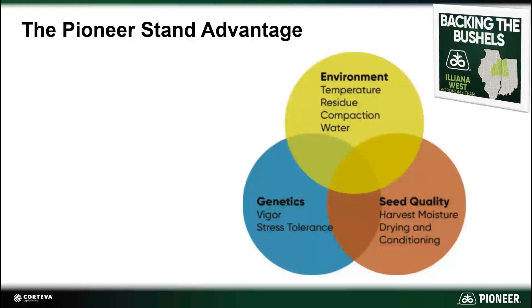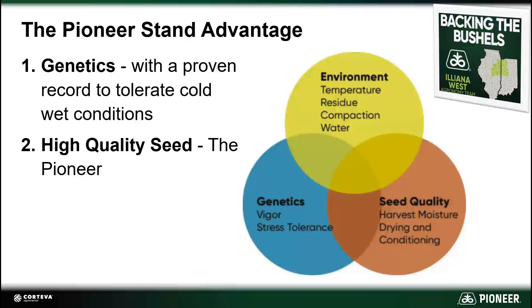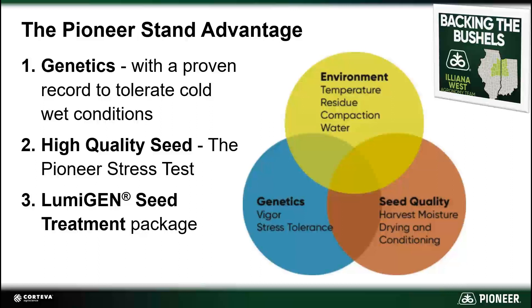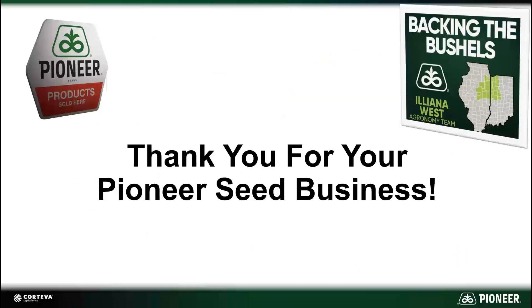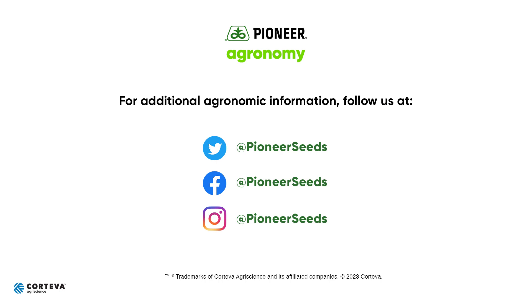Pioneer has been in the seed business since 1926. We have field-proven genetic advantage to tolerate cold, wet conditions. We put high-quality seed in every bag and box, screened with our proprietary Pioneer stress test. We have the right seed treatment package with Lumogen seed treatment to give our seed a fighting chance in tough, cold, wet, saturated environments. Thank you for watching this Pioneer Back in the Bushels video. Be sure to contact your local Pioneer seed rep if you need an expert to help evaluate your corn and soybean stands in high resolution this year. Visit our page on pioneer.com and follow us on Twitter and Facebook for more agronomy insights.